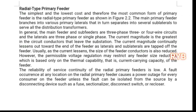The reliability of the radial type feeder is low, because if any fault occurs, the entire section will be removed. Hence the reliability and service continuity of the radial primary feeder is low. If a fault occurs at any location, it causes a power outage for every consumer unless the fault can be isolated by disconnecting switches such as fuses, sectionalizing switches, or reclosers.